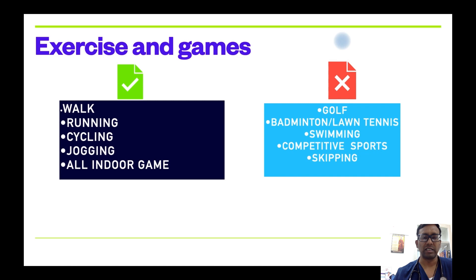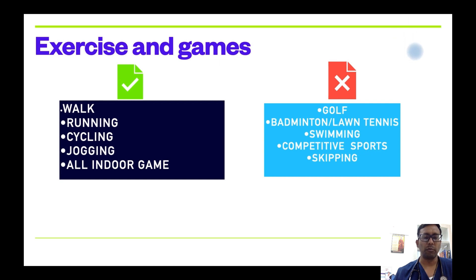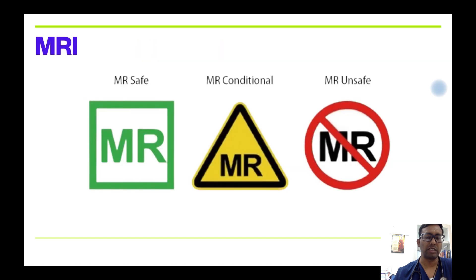Regarding exercise and games: walking, running, cycling, jogging, and all indoor games are allowed. However, avoid any activity requiring your arm above shoulder level. Competitive sports should be avoided wherever possible — particularly high-intensity sports. Badminton, swimming, and skipping should be avoided because the lead passes through the subclavian area between bones, and above-shoulder arm motion can crush the lead between those bones.